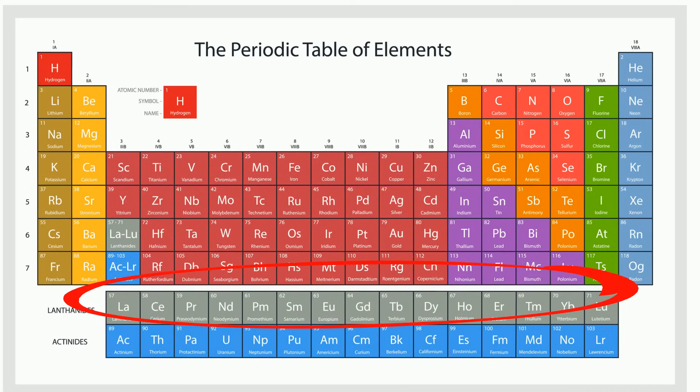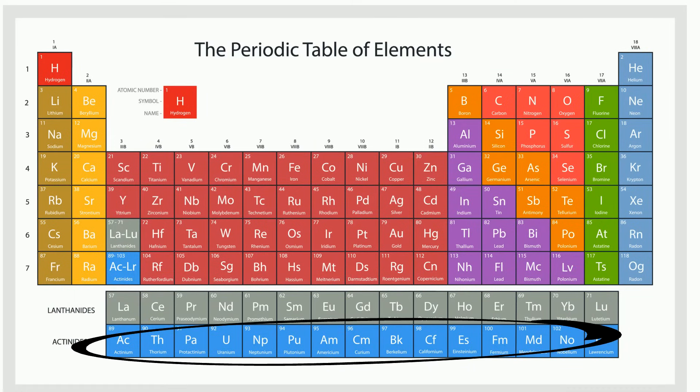The lanthanide series, elements 51 through 71, are found at the bottom of the periodic table. And the actinide series are elements 89 through 103.